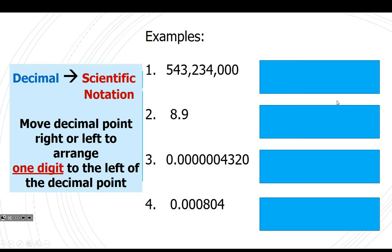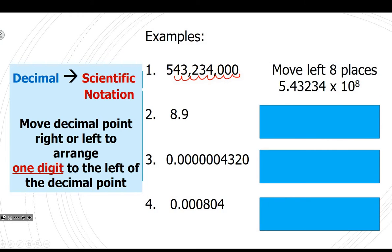So if it's a decimal, you need to be able to put it in scientific notation. If we're looking at the first one, your decimal is right here to start with. You need to make sure you move it 1, 2, 3, 4, 5, 6, 7, 8 places to the left. And when you do that, you get this number. On number 2, what should we write? 8.9 times 10 to the 0.